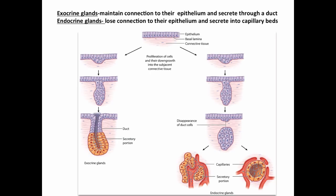The next topic to look at is exocrine glands, which is a fairly simple topic. It's important to be able to distinguish between exocrine glands and endocrine glands, and particularly their formation embryologically.